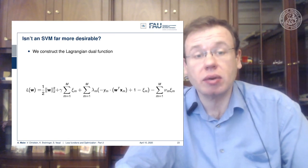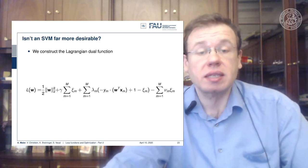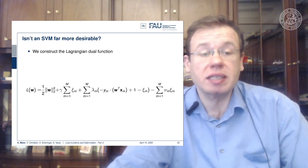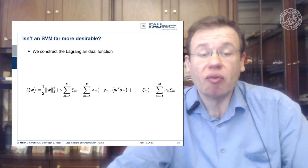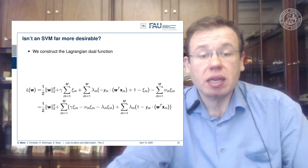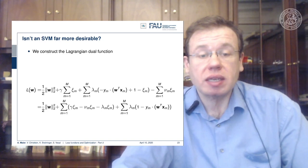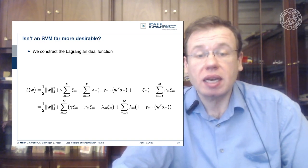But then we have a single Lagrangian function that can be thought to be minimized for all w, for all ξ, for all λ. So there's a lot of parameters introduced here. We can rearrange it a little bit and put all of the ξ into one sum and then all of the constraints into the other sum. So this is the same as the line above, but with a slight rearrangement.